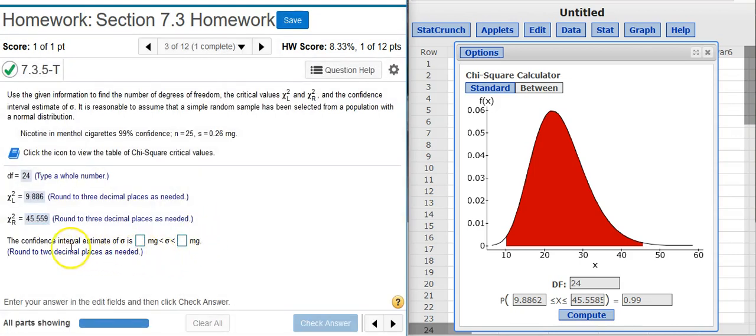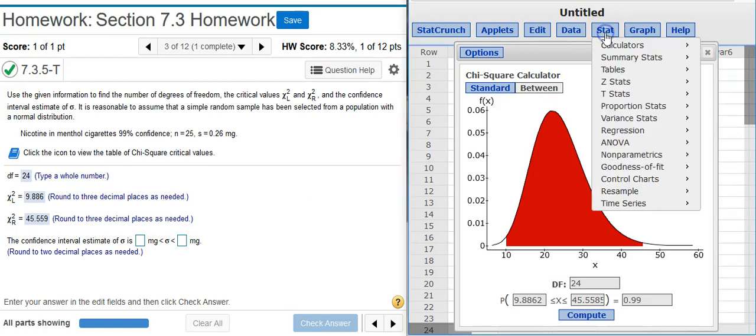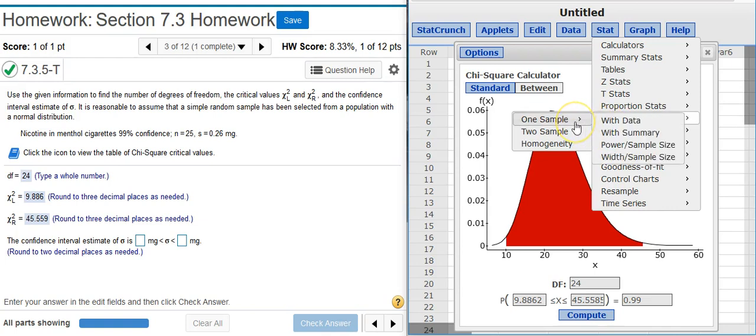And now the last part asks for a confidence interval estimate on the population standard deviation. To do that, I'm going to come back here to StatCrunch and go to Stat, Variance Stats, because that's how we calculate anything with standard deviation inside the StatCrunch application. One sample, because I have only one sample, with summary, because I don't have actual data.